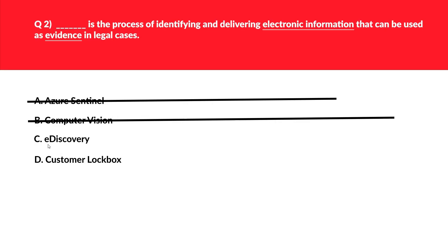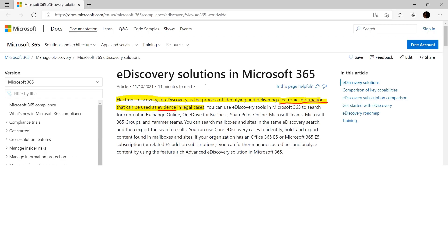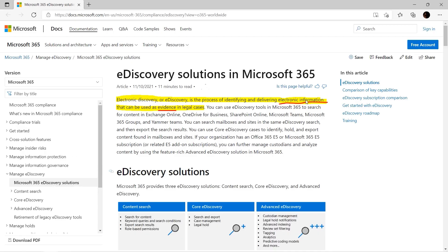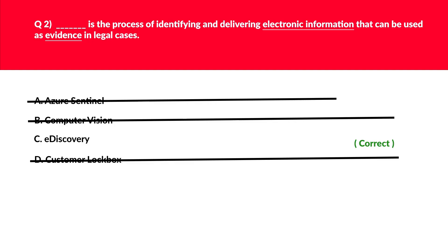Let's look at option C, that is e-discovery. Quick tip for the exam: whenever you see keywords such as 'electronic information' or 'evidence,' e-discovery should strike in your mind. Option D, Customer Lockbox, provides an interface for customers to review and approve or reject customer data access requests — that seems incorrect. Before locking, if you look at the official documentation under e-discovery: electronic information that can be used for evidence in legal cases. We'll log C as the correct answer.